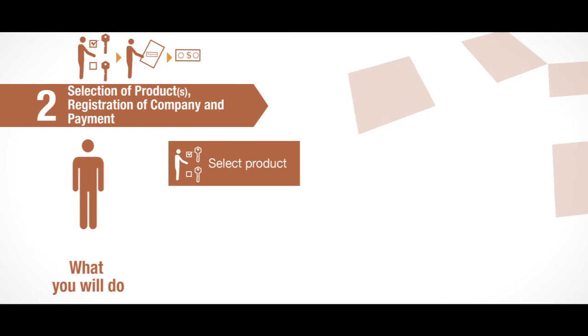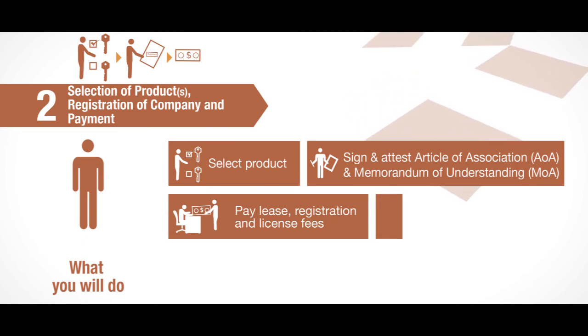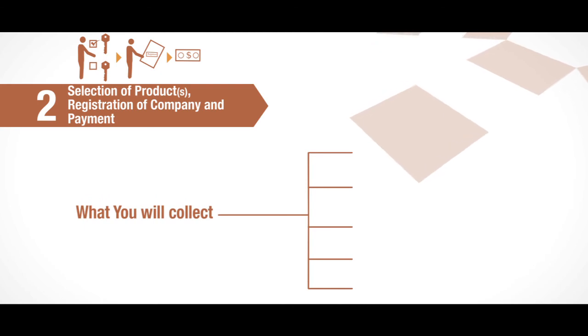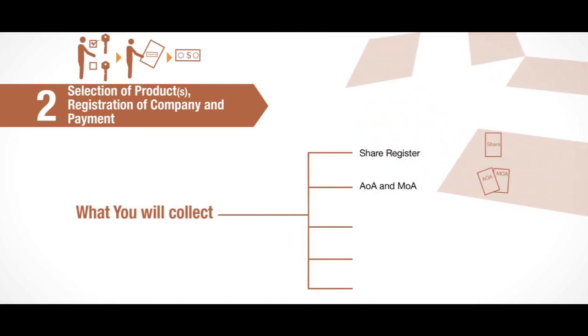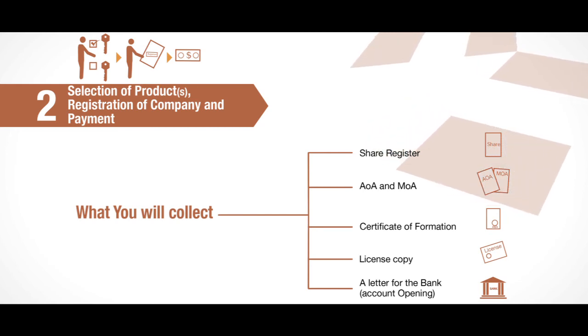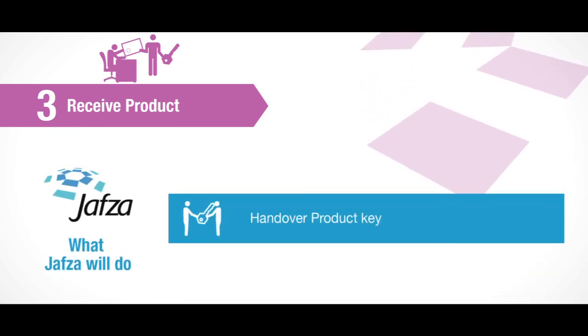Step 2 - Selection of products, registration of company and payment: You will select a product, sign and attest the Articles of Association (AOA) and Memorandum of Association (MOA), pay lease, registration and license fees, pay processing fee, and sign all documents. You will collect the share register, AOA and MOA, certificate of formation, license copy, a letter for the bank, and account opening documents. Step 3 - Receive product: You will receive a product key and register on the Dubai Trade Online Portal to activate your account. JAFSA will hand over the product key.